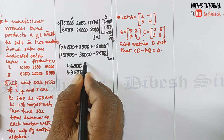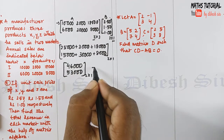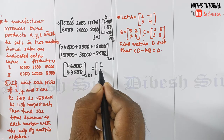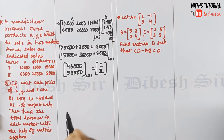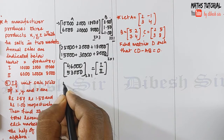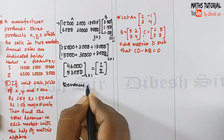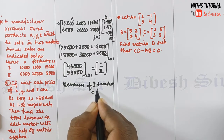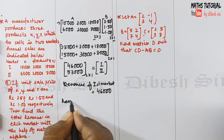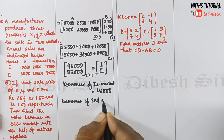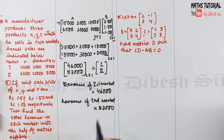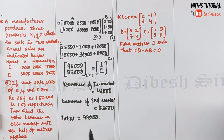This gives us a 2×1 matrix. Revenue of the first market is clearly 46,000 and revenue of the second market is clearly 53,000. So total revenue is 46,000 plus 53,000, which is 99,000. This is our final answer.